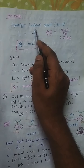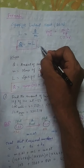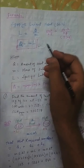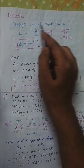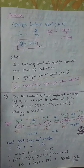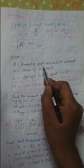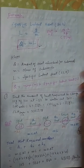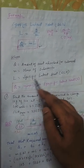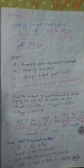If you cross multiply, we get Q equals L times M. This is the formula for specific latent heat — Q equals M into L. Here, Q is the amount of heat absorbed or released, M is the mass of the substance, and L is the specific latent heat.